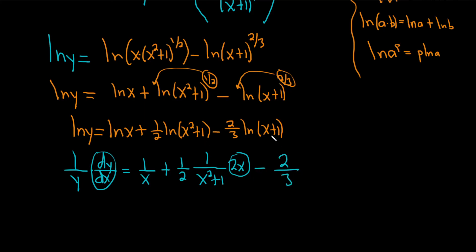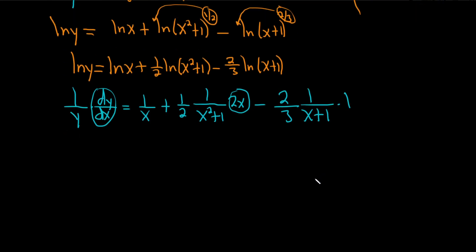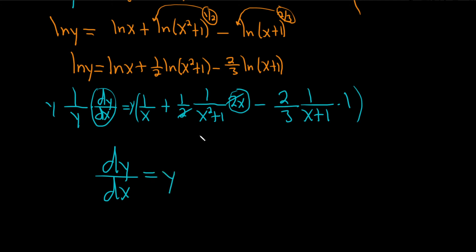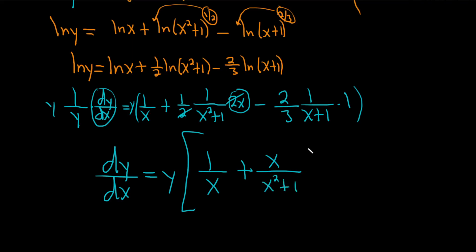We can cancel the twos, and now multiply both sides by y. So dy/dx equals y times the bracket: 1 over x plus x over x squared plus 1, minus two-thirds times 1 over x plus 1. And that's an acceptable final answer.